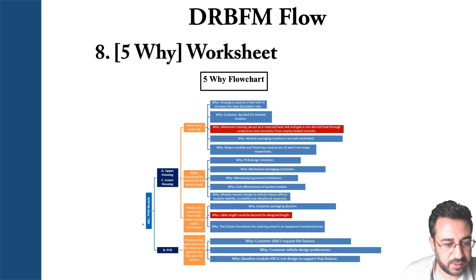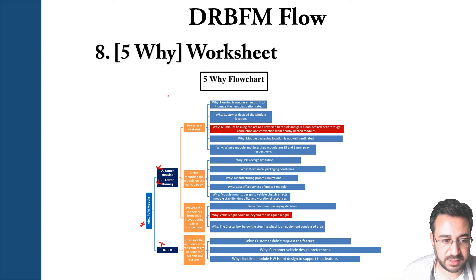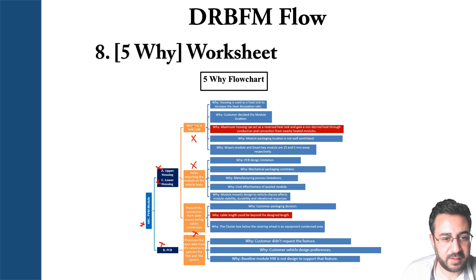For a 360-view vehicle module — let's call the module assembly ABC — imagine an exploded view with Part A, Part B, and Part C. The module is an enclosure with an upper housing, a lower housing, and a PCB in the middle performing calculations, sensory readings, and computational processing to give the right output. The upper and lower housings serve as a heat sink and help with mounting, while the PCB processes input data from cameras and so on.